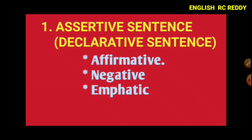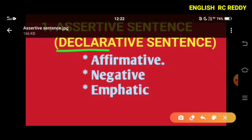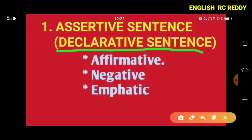This is the topic of kinds of sentences. The first type is the assertive sentence, which is also called a declarative sentence. For example: 'They are coming,' 'They are going.' The affirmative form is 'I am going' and the negative form is 'I am not going' — 'not' makes it negative.